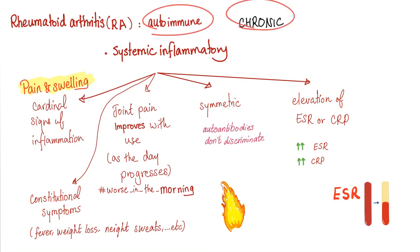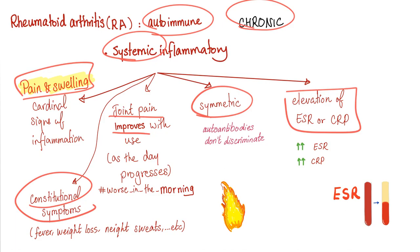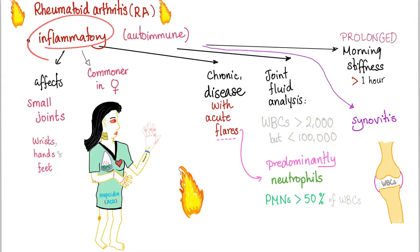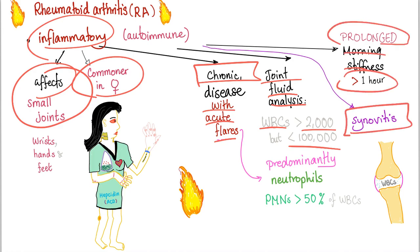Rheumatoid is autoimmune chronic systemic inflammation; therefore there is pain and swelling, constitutional symptoms, and joint pain that will improve with use. It's symmetrical arthritis with elevation of ESR and CRP. It affects small joints and is more common in females. It's a chronic disease, sometimes with acute flares. Joint fluid analysis gives a white blood cell count greater than 2,000 but less than 100,000. Prolonged morning stiffness for more than one hour is characteristic, and synovitis is key.